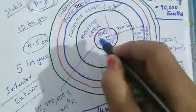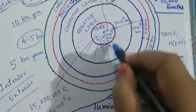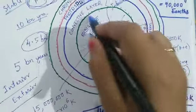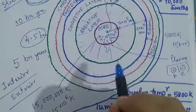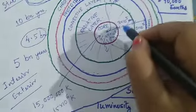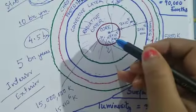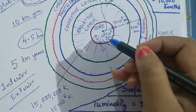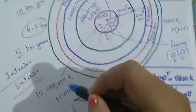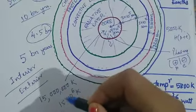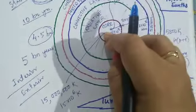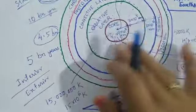Here the protons are combining to produce heavier elements along with gamma ray photons. Now there is another layer surrounding this core called the radiative layer. The dimension is around 3 into 10 to the power 5 kilometers. So what does this radiative layer do? The temperature at the core is 15 into 10 to the power 6 Kelvin.